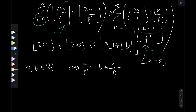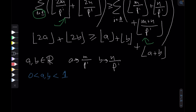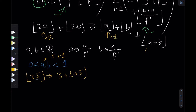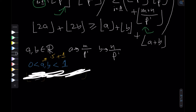We can restrict a and b to just their decimal parts — i.e., a, b ∈ [0, 1). This works because of how the floor function operates: floor(3.5) = 3 + floor(0.5). If we add 1 to a, it adds 2 to 2a, but also adds 1 each to floor(a) and floor(a+b) on the right — so the integer parts cancel out and don't affect the inequality. Restricting to [0,1) condenses the problem into just two cases.